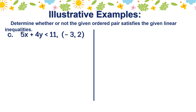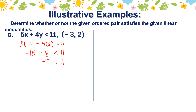For letter C, we have 5x plus 4y is less than 11, and the ordered pair (negative 3, 2). We substitute: 5 times negative 3 plus 4 times 2 is less than 11. 5 times negative 3 is negative 15, plus 4 times 2 which is 8. So negative 15 plus 8 gives us negative 7, which is less than 11. The statement is true. So (negative 3, 2) is a solution.